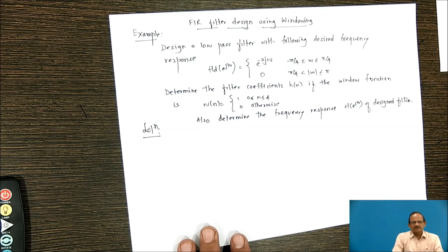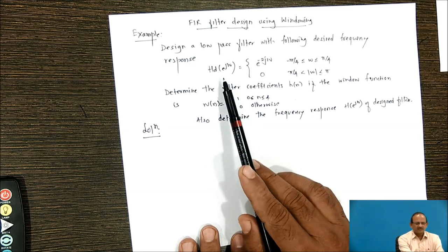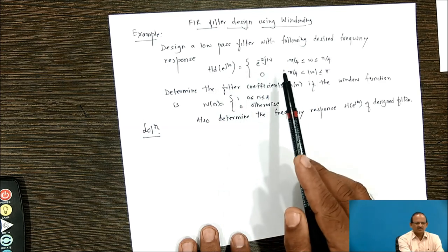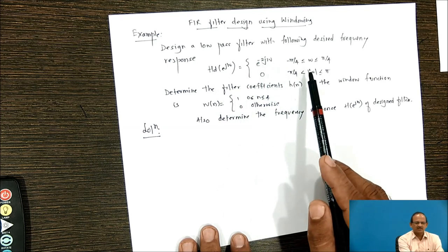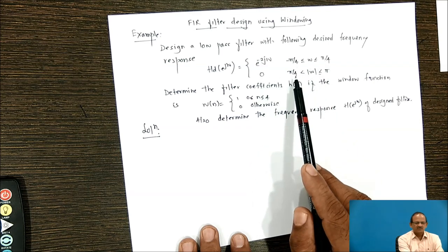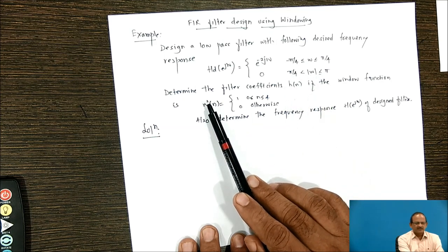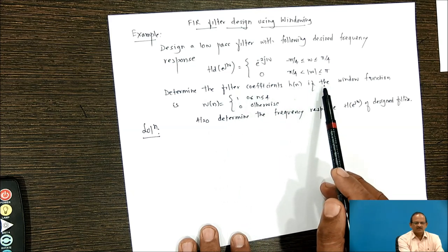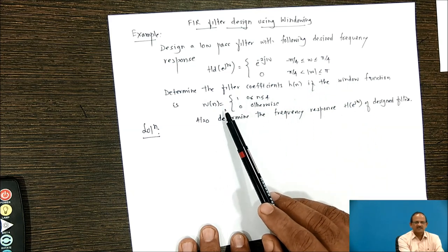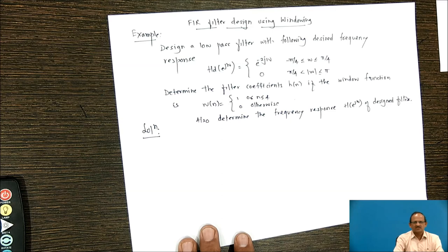Now consider an example. Design a low-pass filter with desired frequency response given by Hd(e^jω) = e^(-2jω) for -π/4 to +π/4, and 0 for |ω| between π/4 to π. Determine the filter coefficients h(n) if the window function w(n) is given, and also determine the frequency response H(e^jω) of the desired filter.